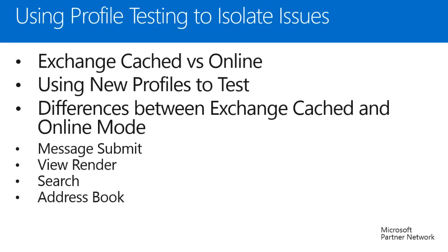We always want you to use new profiles to test. It's pretty easy to go and convert an existing profile from cached to online, but we definitely want to try with a new profile. The reason for that is converting a profile between cached and online mode can lead to some unexpected behavior, such as an online mode profile using an OAB or unexpected message submit behavior. A really easy test is to go into the mail applet within control panel and create a new profile.